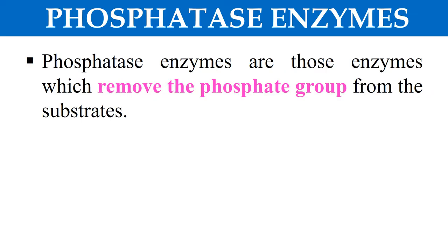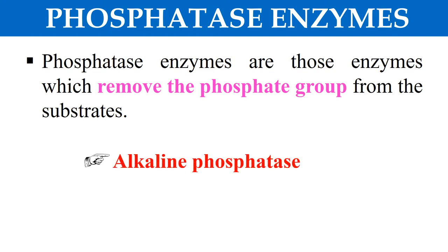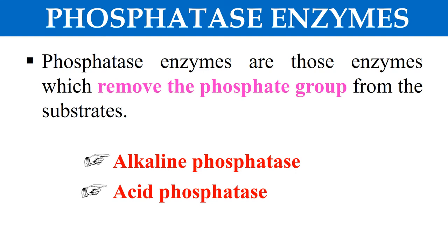What are the Phosphatase Enzymes? These are the enzymes which remove the phosphate group, because as the name indicates — phosphate plus 'ase' means the enzymes which remove the phosphate group from their substrates. These are generally two types: first are the Alkaline Phosphatase and second are the Acid Phosphatase Enzymes.